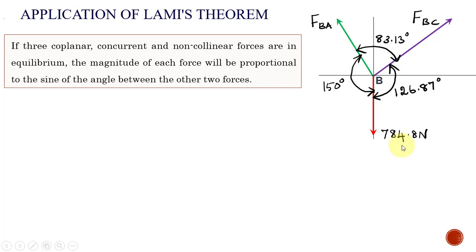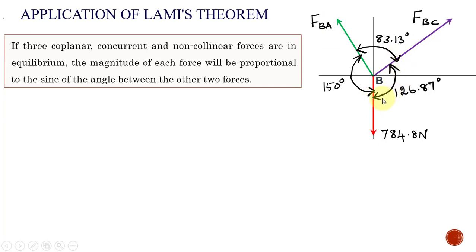These three forces must be coplanar — in our case they lie on the same plane, so they are coplanar. Concurrent means all three forces must meet at the same point; here they all meet at point B. The forces must be non-collinear, meaning they must not lie on the same line. Finally, the three forces must be in equilibrium. When all conditions are satisfied, each force is directly proportional to the sine of the angle between the other two forces.